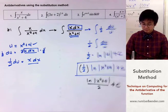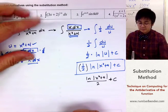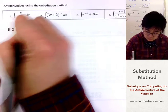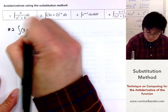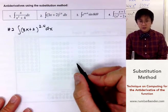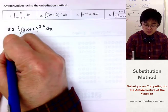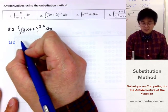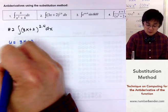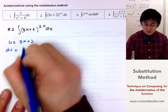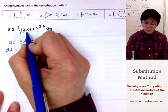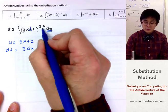For problem number two, we'll integrate 3x plus 2 raised to 2.4 dx. This is straightforward because u is usually inside the parentheses or inside the radical. So u is 3x plus 2. Taking the derivative of u with respect to the variable, we get du equals 3 dx, and we have dx in our integral with the new u function raised to 2.4.